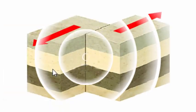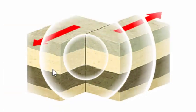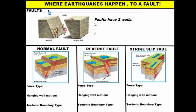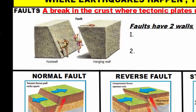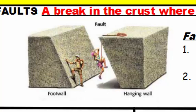Let's take a look at fault lines — the locations at which earthquakes occur. Faults are breaks in the crust where tectonic plates meet and earthquakes happen. Faults have two walls, or two halves: a foot wall and a hanging wall. You need to know the direction of movement of the hanging wall to understand the three types of faults: the normal fault, reverse fault, and strike-slip fault.